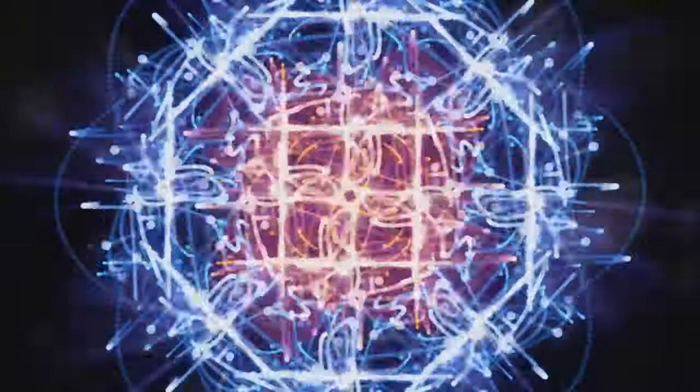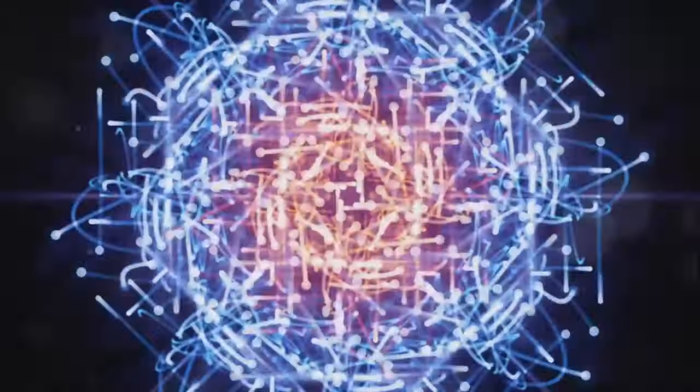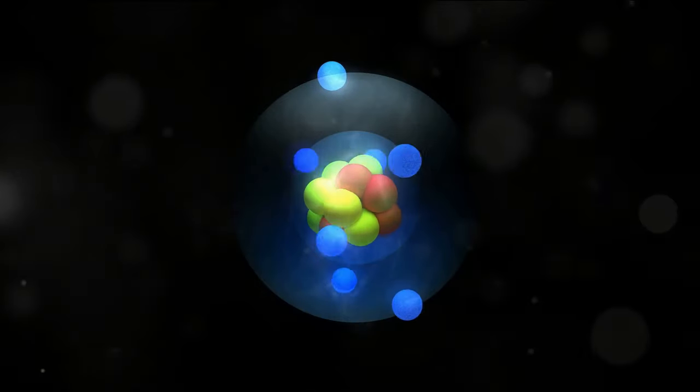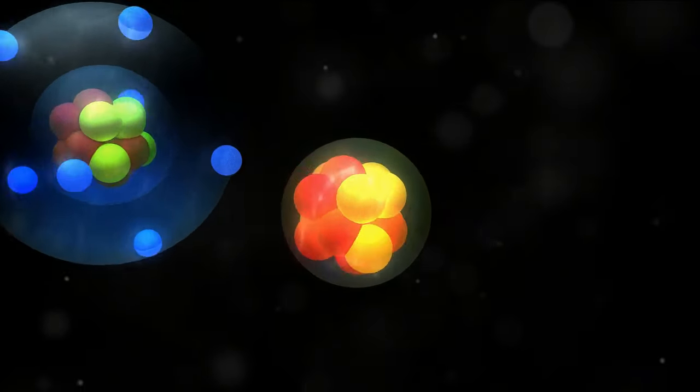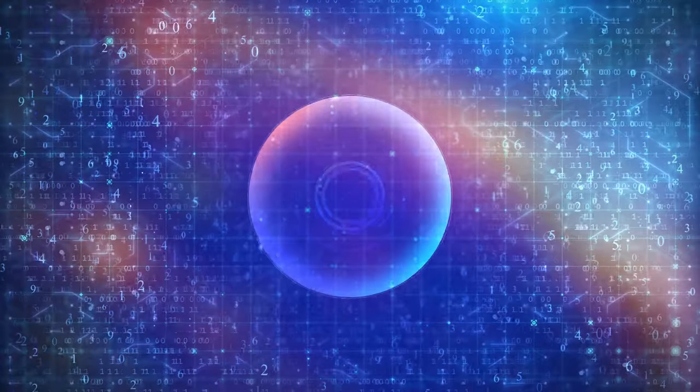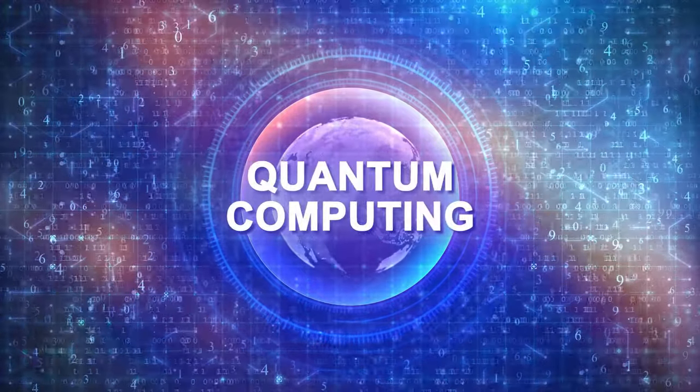In the quantum realm, particles can exist in multiple states at once. An electron, for instance, could be in two places simultaneously. It's only when we measure or observe it that it chooses one state over the other, much like the spinning coin choosing heads or tails when it lands. This concept might sound baffling because it defies the rules of our everyday macroscopic world.